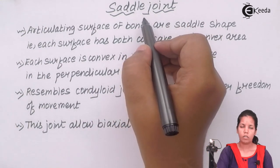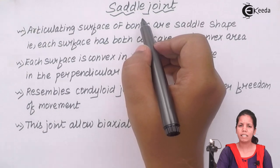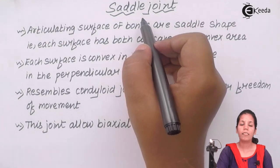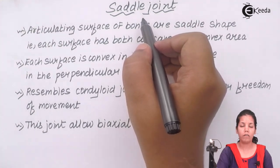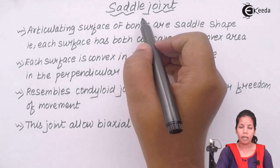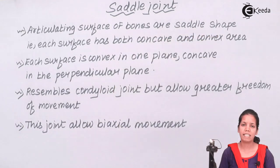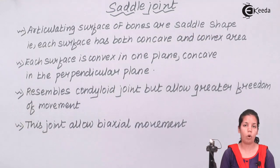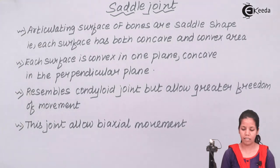Saddle joints basically represent the saddle that is kept on the horseback whenever you are riding. Saddle joint mechanism represents that. Saddle joints are one of the examples of your synovial joints, along with ball and socket joints, hinge joints, and others.